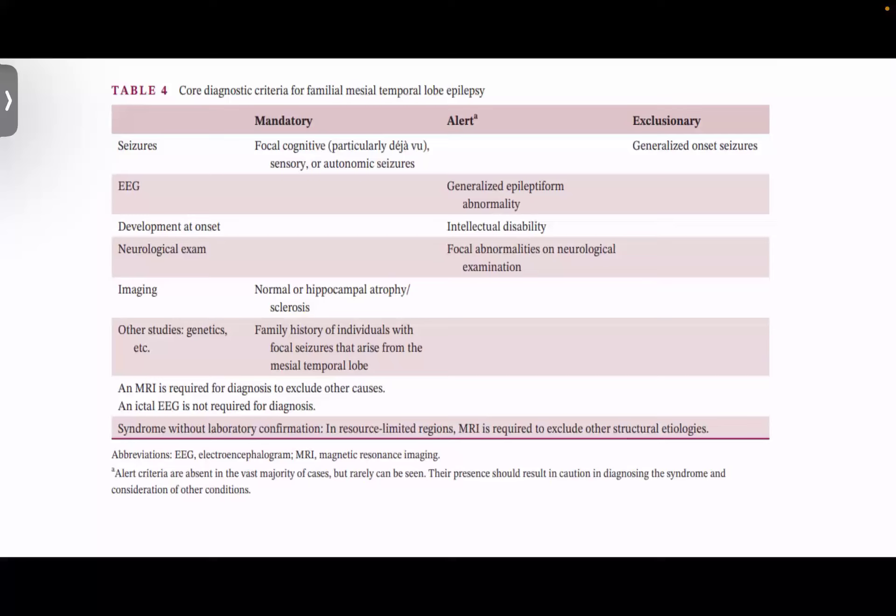In syndromic epilepsy, MRI is important because most syndromes can have structural changes — for example, mesial temporal lobe epilepsy with hippocampal sclerosis. MRI is needed either to rule out other causes or to rule in mesial temporal lobe epilepsy. Ictal EEG is not required, but MRI may be required in these cases.